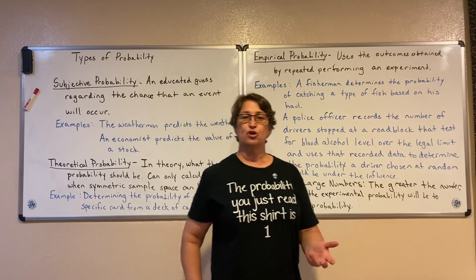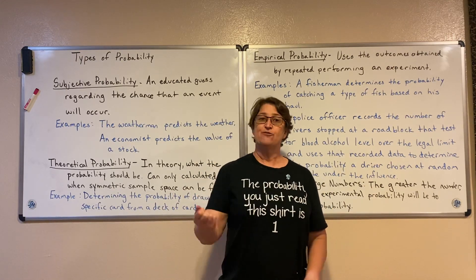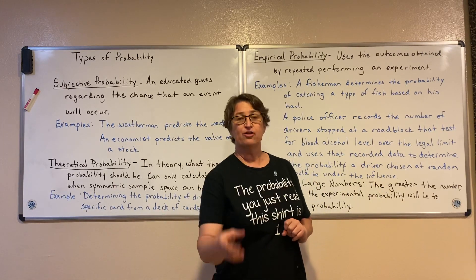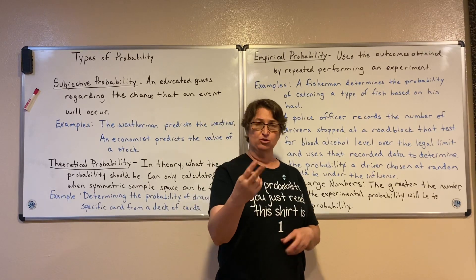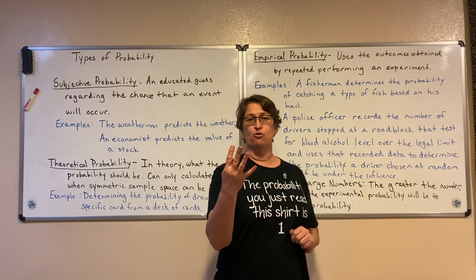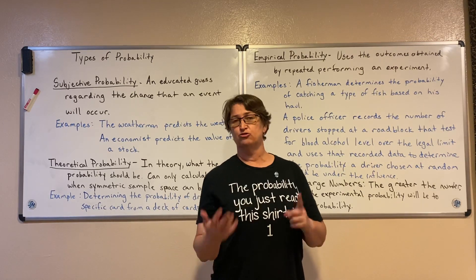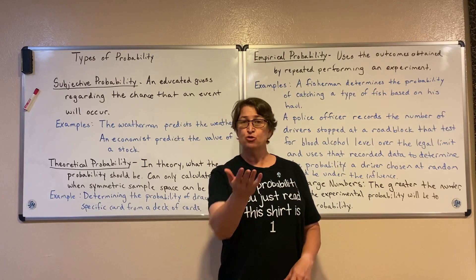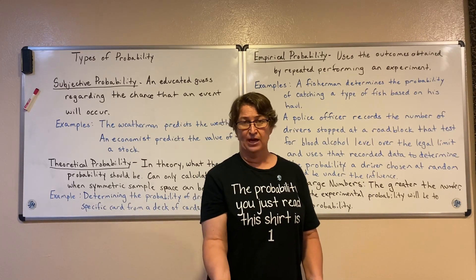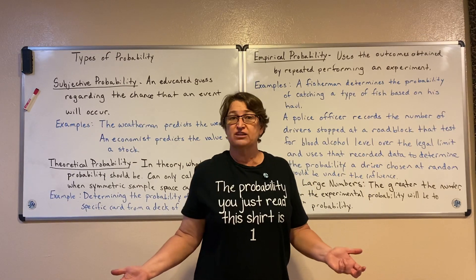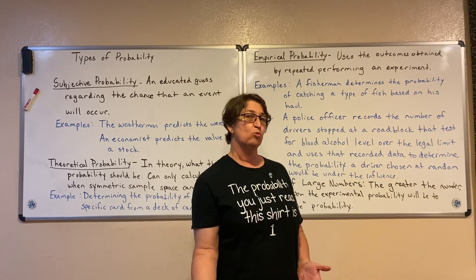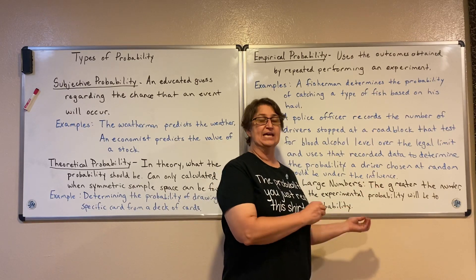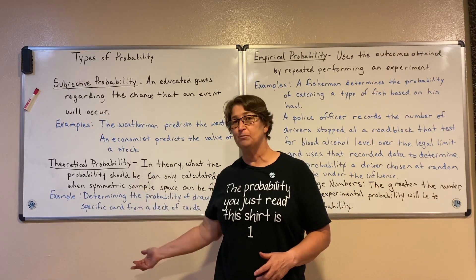Empirical probability doesn't always match theory. When you roll a die six times, we would expect in theory one each of 1, 2, 3, 4, 5, and 6 — that's the theoretical probability of rolling a six-sided die. But in real life, you might roll six times and get all sixes, or all ones, or maybe three ones and three of something different. So empirically, it doesn't always match what it should be in theory.